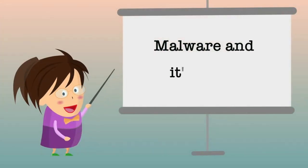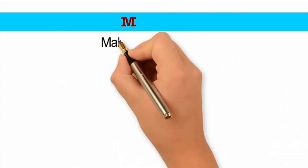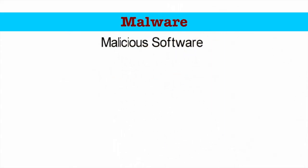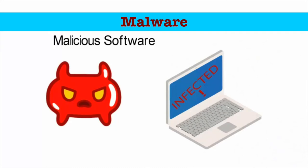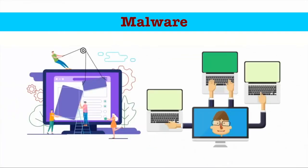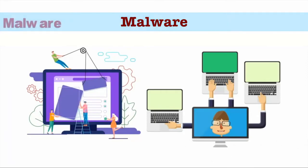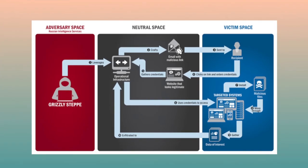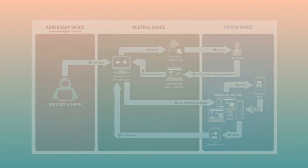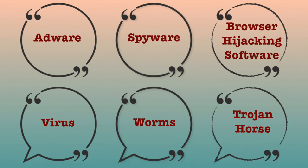Now let us discuss malware and its types. Malware stands for malicious software and it is designed to gain access or be installed into a computer without the consent of the user. They perform unwanted tasks in the host computer for the benefit of a third party. There is a full range of malwares — from those which simply distract or annoy the user, to complex ones which capture sensitive data from the host machine and send it to remote servers.